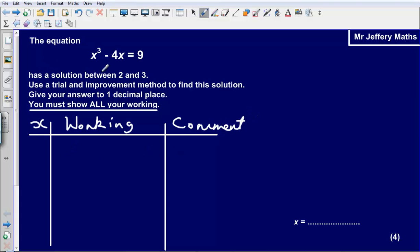It tells us that we have a solution between 2 and 3, so I'm going to start off by substituting the numbers 2 and 3 into this equation. So I'm going to start off: 2 cubed minus 4 times 2 in brackets. 2 cubed is 8 minus 4 times 2. That gives us an answer of 0. We need it to equal 9, so we can say here that it is too small.